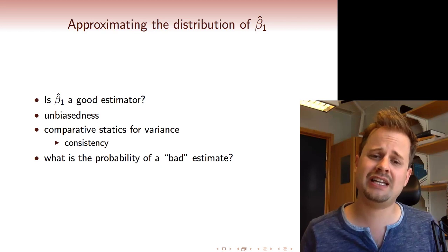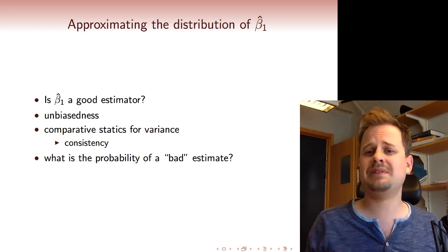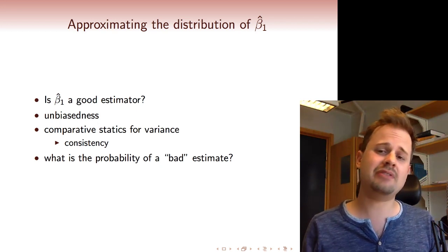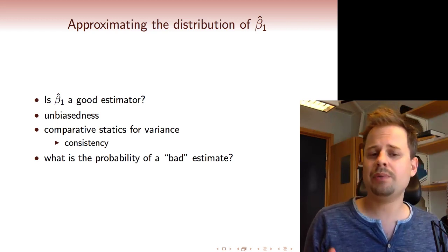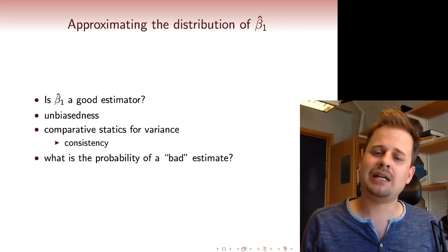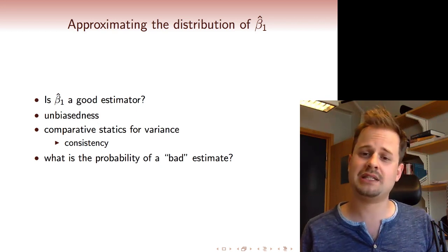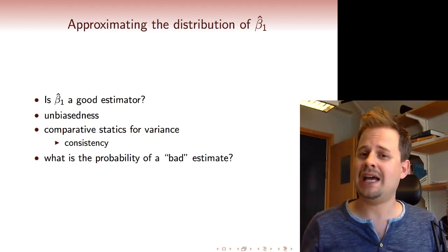For example, one thing we might be interested in is probabilities of bad estimates, where a bad estimate might be one that overestimates the truth by more than one or underestimates the truth by more than one. To calculate these kinds of probabilities, we have to know more than just the expectation or the variance of the estimator — we have to characterize its whole distribution. A very powerful result in statistics called the central limit theorem says we can approximate the distribution of a lot of random variables by a normal distribution, and this turns out to also work here.